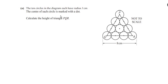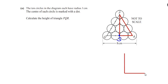The center of each circle is marked with a dot. We have to calculate the height of triangle PQR, that is the height from point P to the base QR. To find the height we can make a right-angled triangle and let us give the name S to this point. Let me draw it out separately.